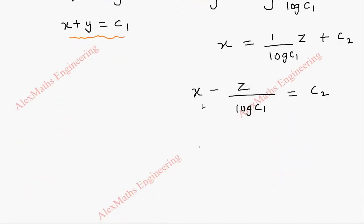So x minus z by log c1 is a constant c2. And now by taking LCM it is x into log c1 minus z. Whole division log c1 equal to c2.